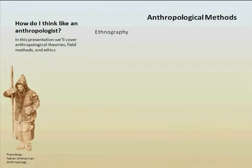Continuing with our lecture on how to think like an anthropologist, we want to talk about some anthropological field methods. One of the primary things we do is ethnography. Cultural anthropologists are often referred to as ethnographers. This is basically a research strategy where the approach is to get as much information as possible from as many angles as possible, so that we can get a holistic view of the culture. It's descriptive in nature, and there are multiple field techniques to help us do ethnography.